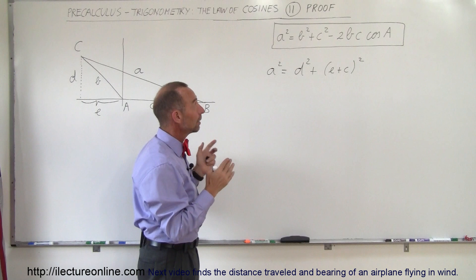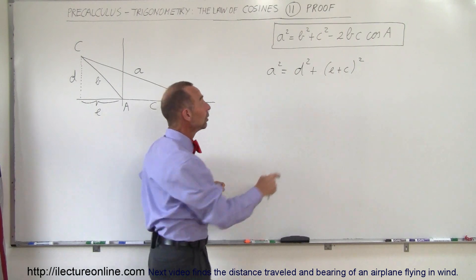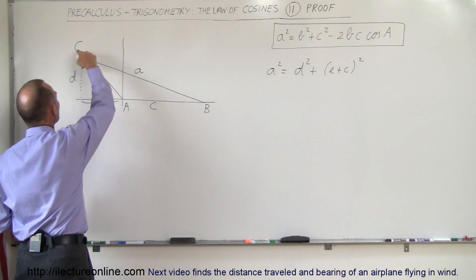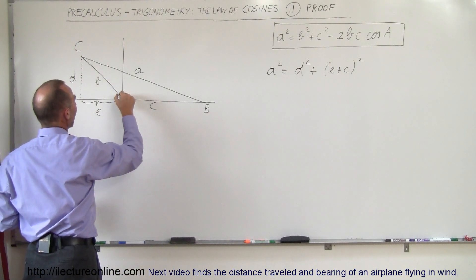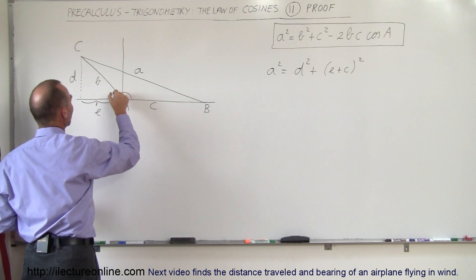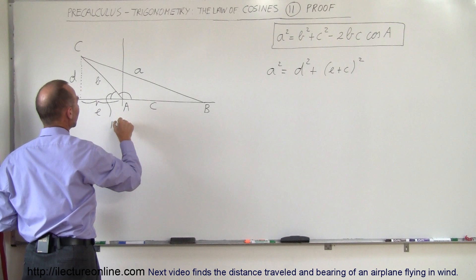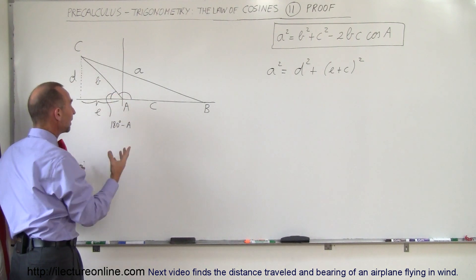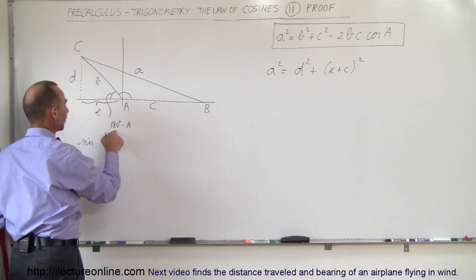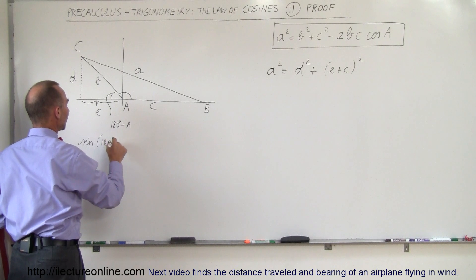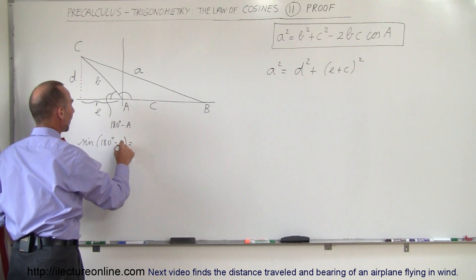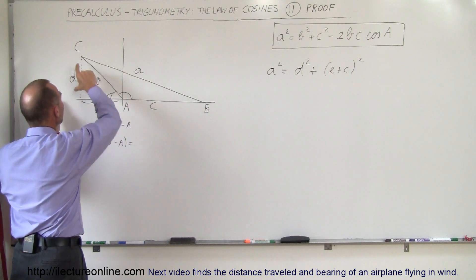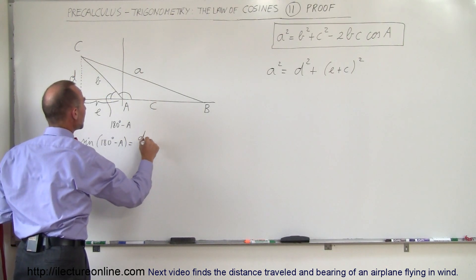The law of cosines does not include D and E, so we have to replace D and E by something that relates to the original variables. Notice that we have the angle A here, and then this angle right here would be 180 degrees minus A. This is the opposite side to D, so by definition the sine of 180 degrees minus A equals the ratio of the opposite side to the hypotenuse — D divided by B.